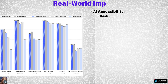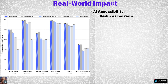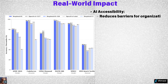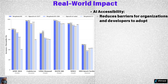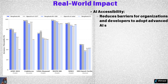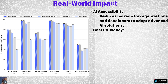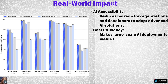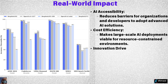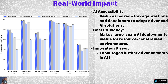What impact does DeepSeek have in the real world? By significantly reducing costs, DeepSeek lowers the barriers to adopting advanced AI. Organizations can deploy cutting-edge AI solutions even in resource-constrained environments. Its open-source approach fosters innovation, enabling developers worldwide to contribute to and benefit from its advancements.